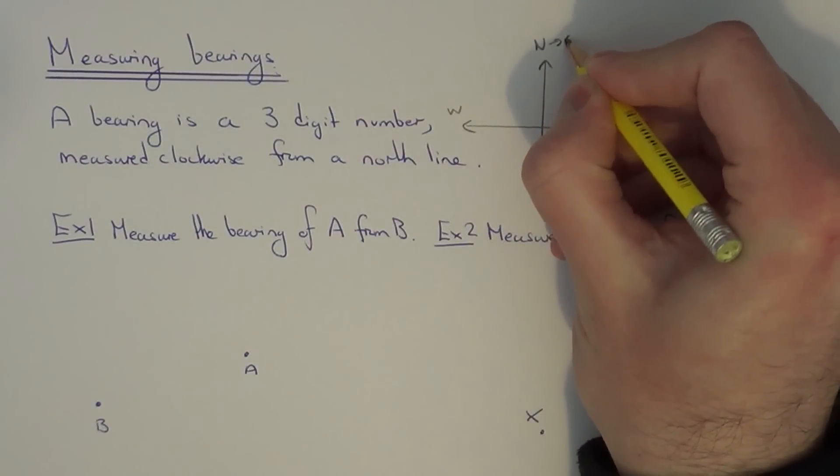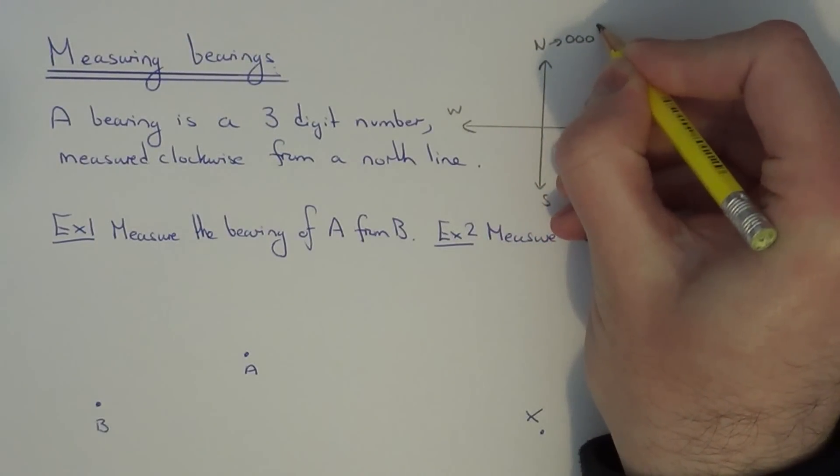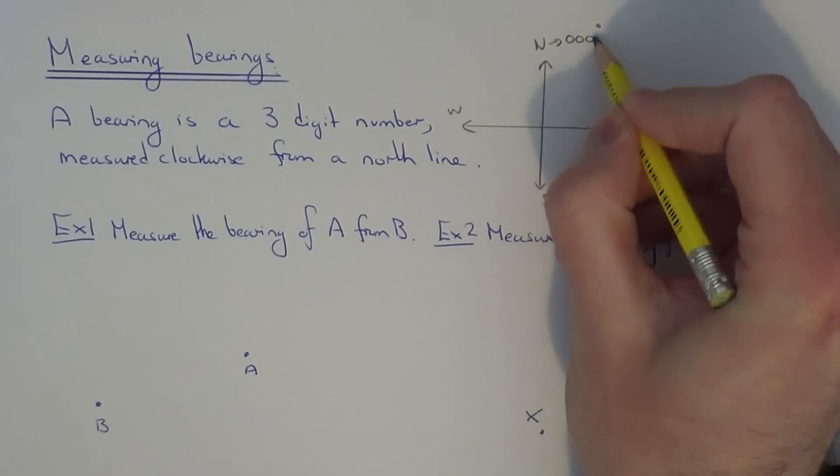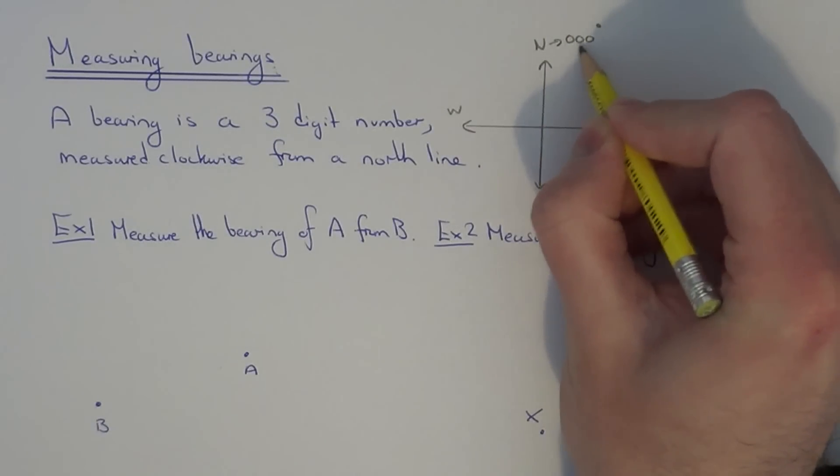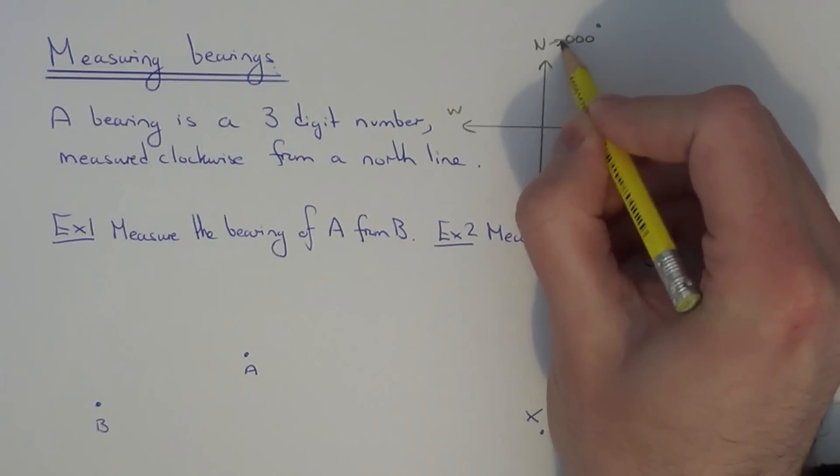North has a bearing of zero zero zero degrees. Remember it has to be a three digit number, hence we've got the three zeros here.